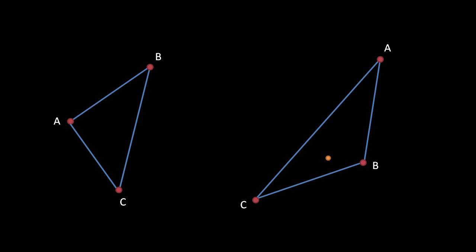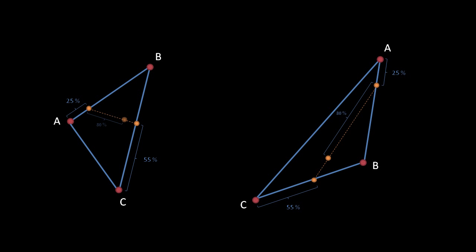To find the point in the left triangle that corresponds to a point in the right triangle, we first find a line — any line — that runs through the point and determine where it intersects two of the edges. With the interpolation values along those edges, we can find the corresponding line in the other triangle. So here, the line runs between the point 25% along edge A to B and the point 55% along edge C to B. We then determine where our interior point lies along this line — here it lies 80% along the orange line in the right triangle — so the corresponding point lies 80% along the corresponding line in the left triangle. And we have our answer.